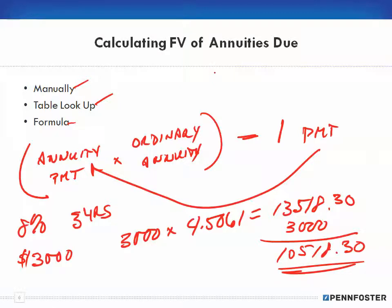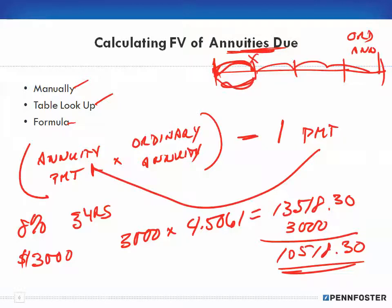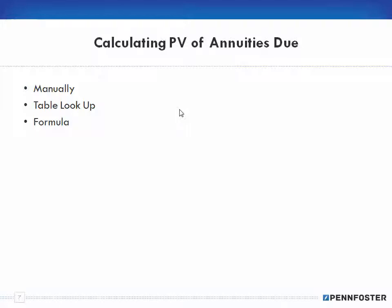When looking at these periods, we're considering whether something happens at the end or the beginning. If it's at the end, that's an ordinary annuity — one, two, three periods. Because an annuity due begins at the start of the period, we have to account for getting interest for that one extra period, so instead of three periods we have four periods.